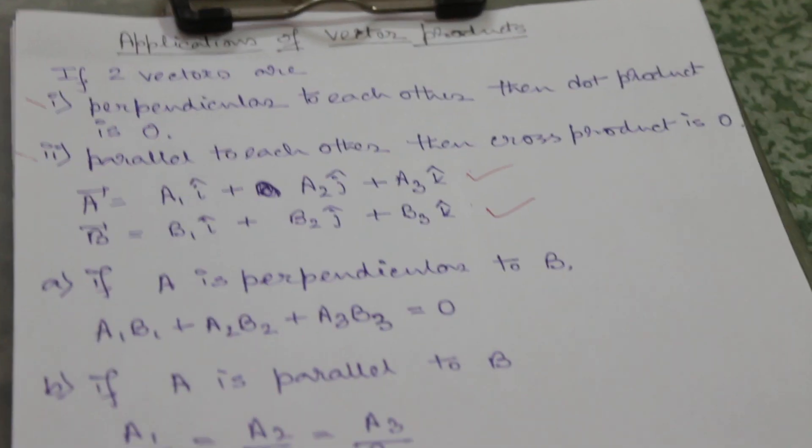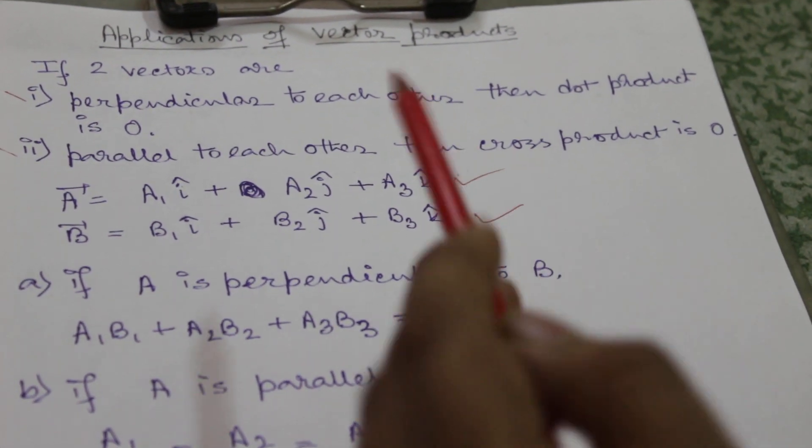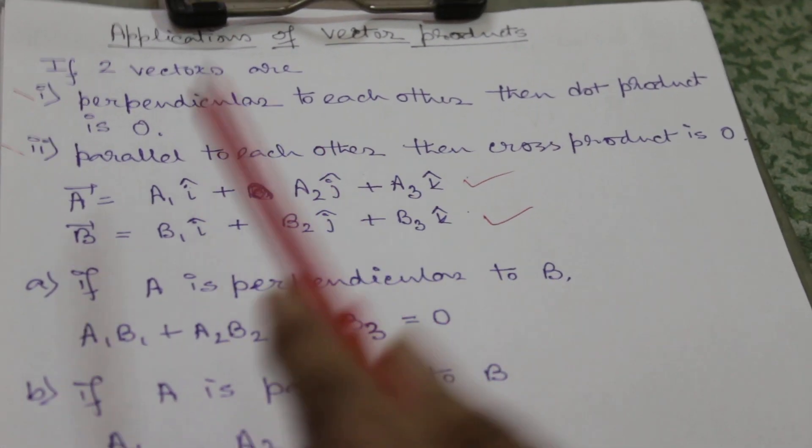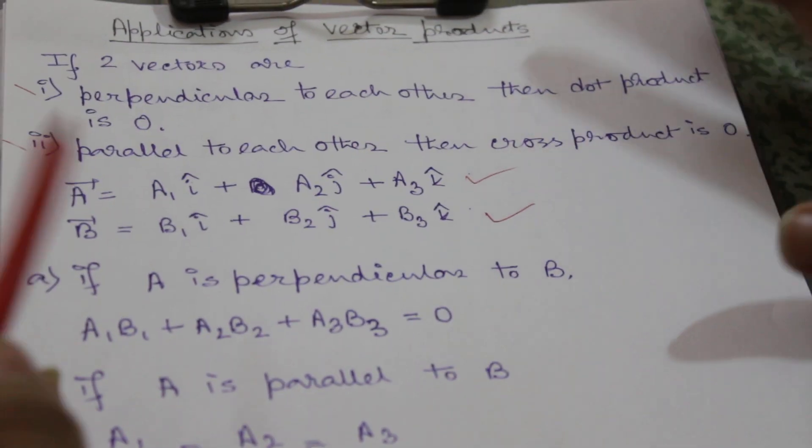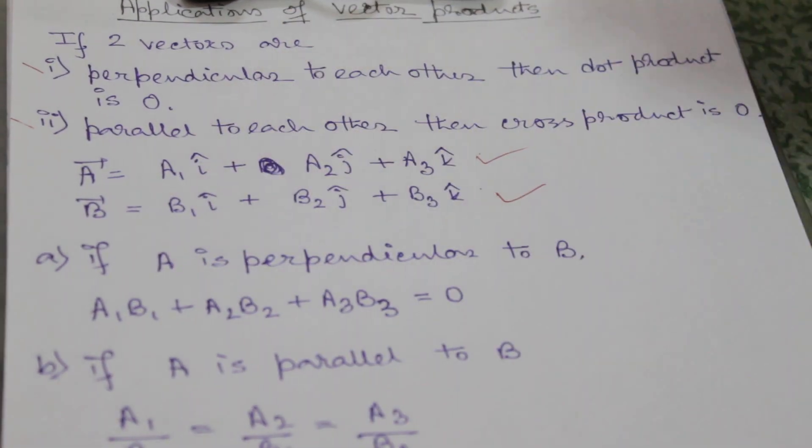If A is perpendicular to B, as I have mentioned earlier, in case of perpendicular vectors their dot product will be equal to zero. So the dot product of these two vectors is a1b1 plus a2b2 plus a3b3, that will be equal to zero.